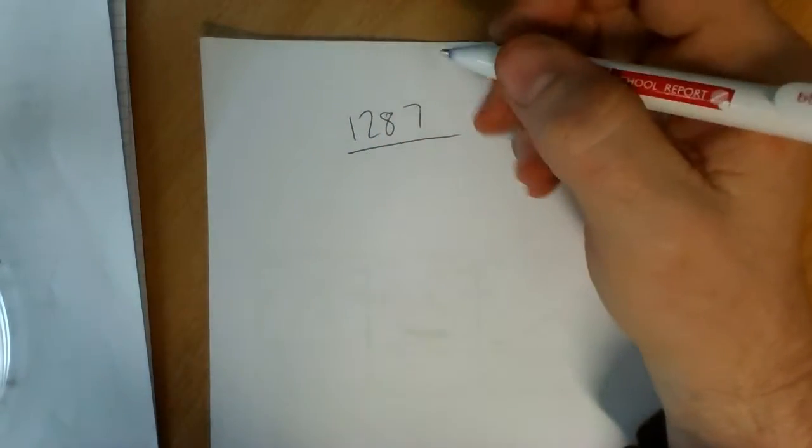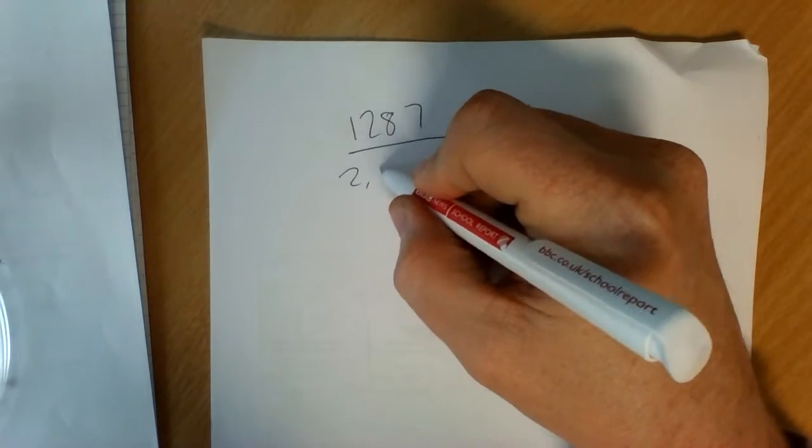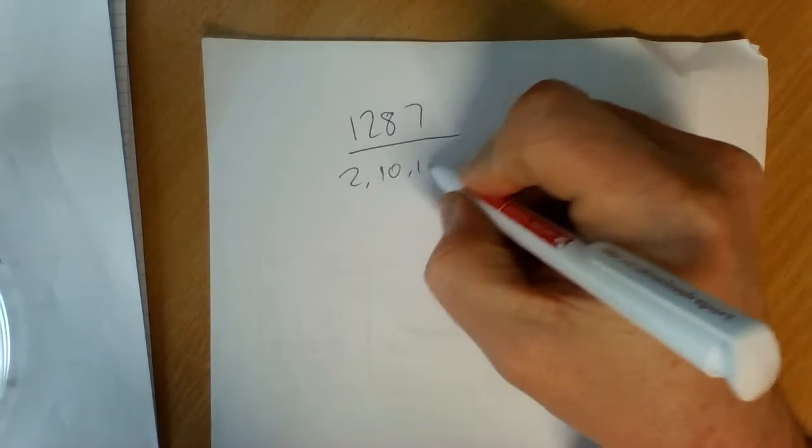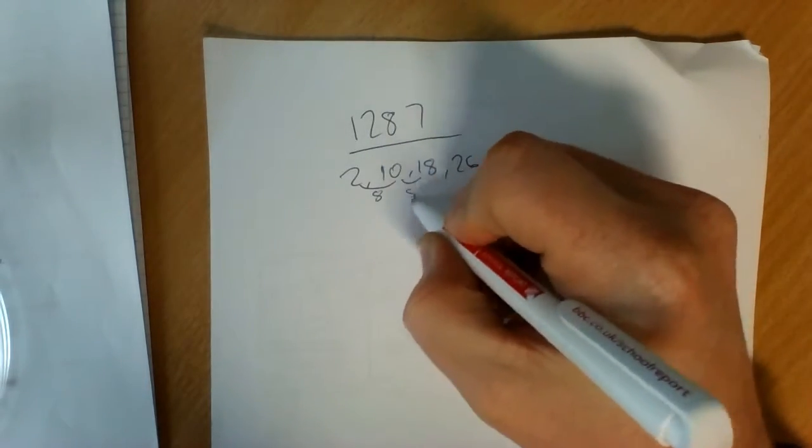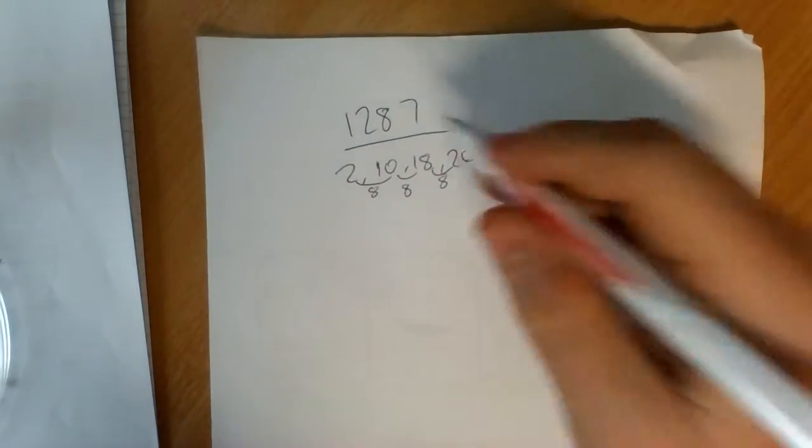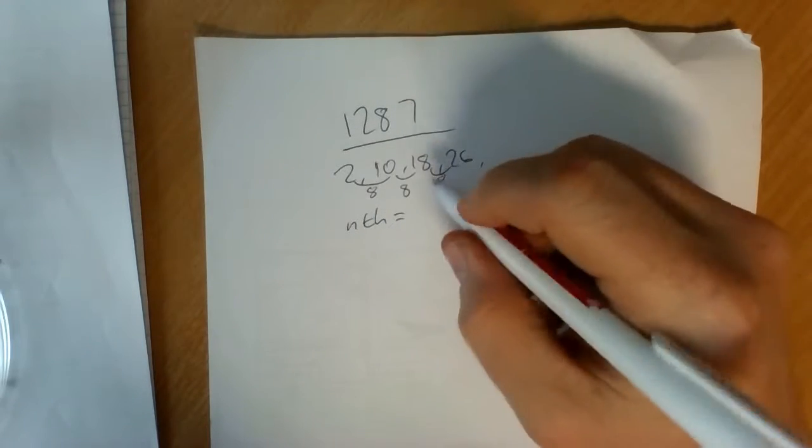Comment 1287 says that you've mixed up term and position for a sequence question like this. These are going up by 8 each time. You work out the gaps and then soon enough you have a rule like this.